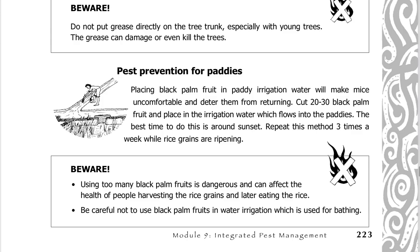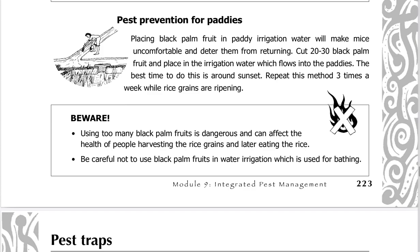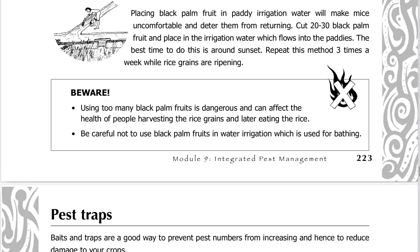Pest prevention for paddies. Placing black palm fruit in paddy irrigation water will make mice uncomfortable and deter them from returning. Cut 20 to 30 black palm fruits and place in the irrigation water which flows into the paddies. The best time to do this is around sunset. Repeat this method 3 times a week while rice grains are ripening. Beware: using too many black palm fruits is dangerous and can affect the health of people harvesting the rice grains and later eating the rice. Be careful not to use black palm fruits in water irrigation which is used for bathing.